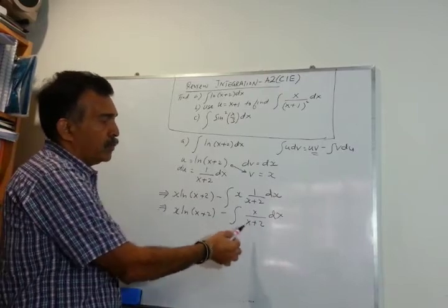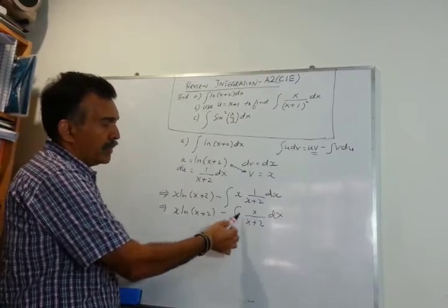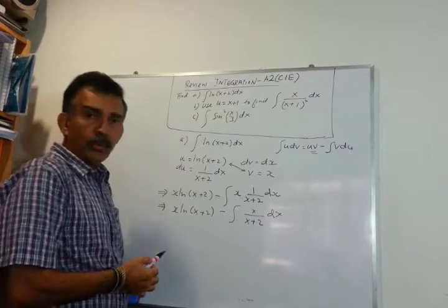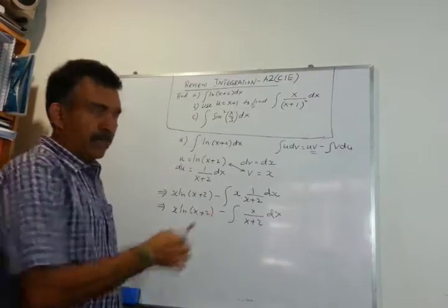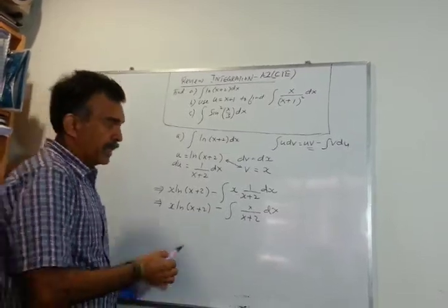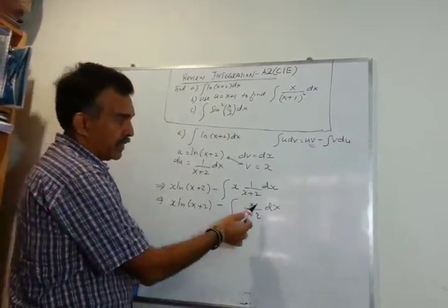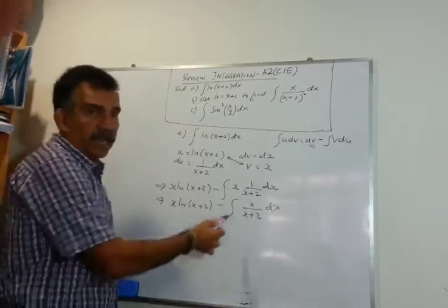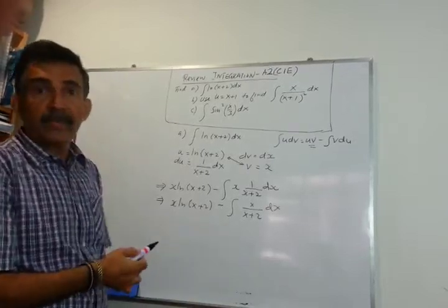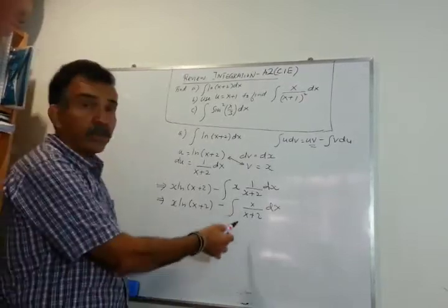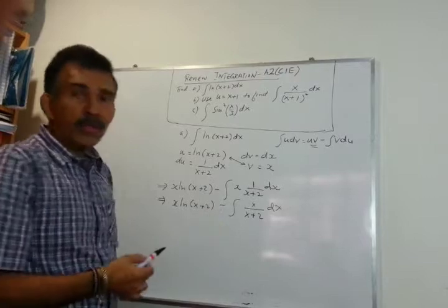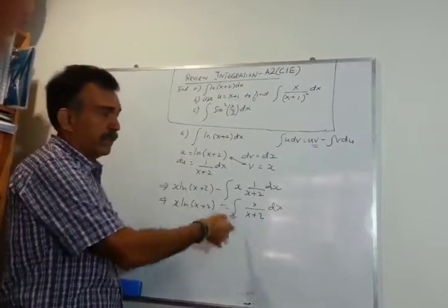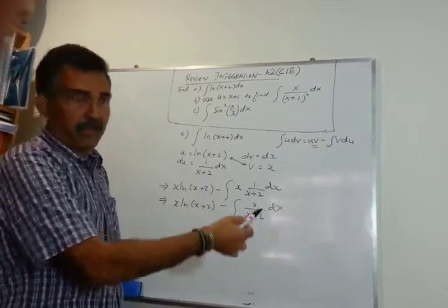So now we can write x·ln(x+2) minus the integral of x over (x+2) dx. When you look at this integral, the numerator is of degree 1 and the denominator is of degree 1, so you can do long division and simplify, then integrate.